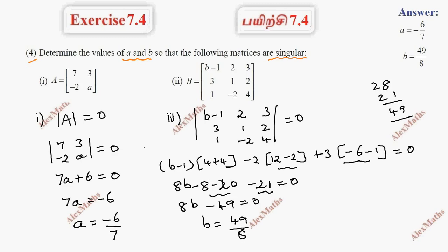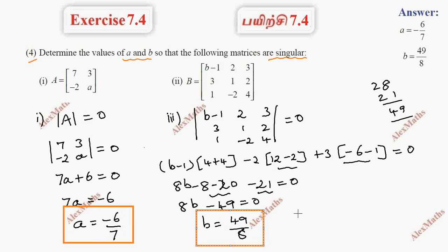So you can get the a and b values. a equals minus 6 by 7, b equals minus 49 by 8. Check the answers: a is minus 6 by 7, b is 49 by 8.